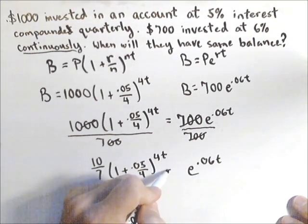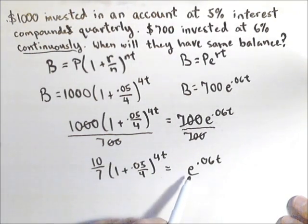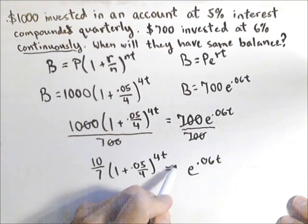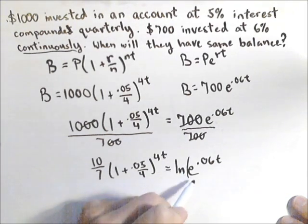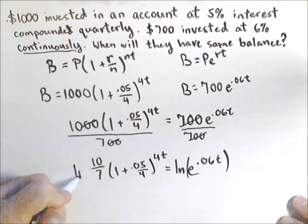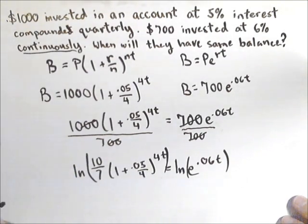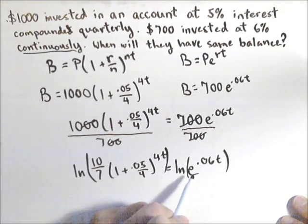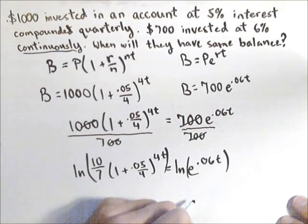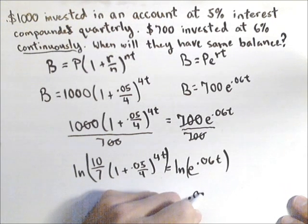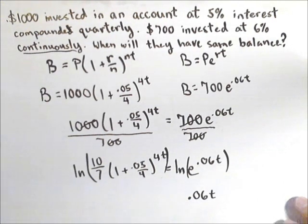So what I'm going to do is because I have this exponential isolated, I'm going to do a natural log of both sides. Now, we can rewrite this problem using logs, but I sometimes think it's easier in this situation to just take a natural log of each side. The reason is, this right hand side by the properties of logs, natural log of e to the .06t is just .06 times t. And we got it solved there on the right hand side.